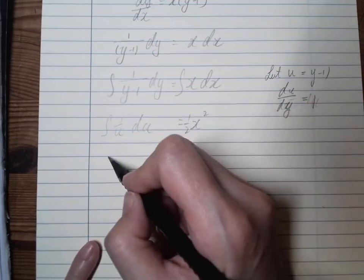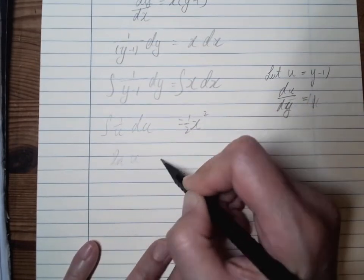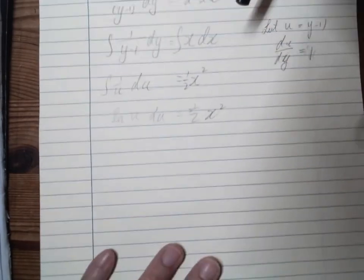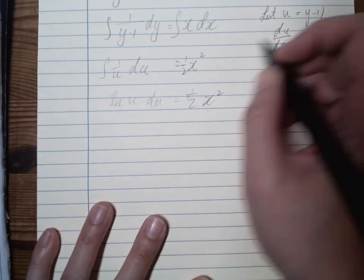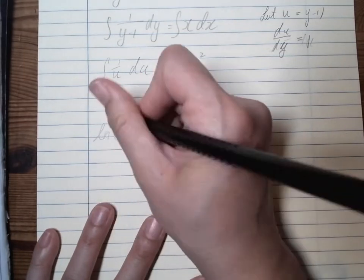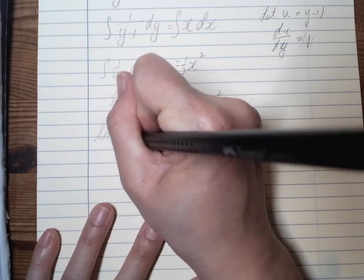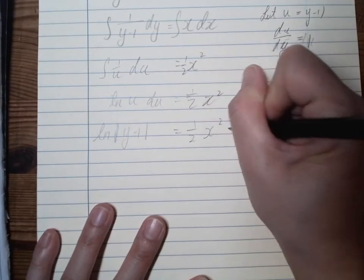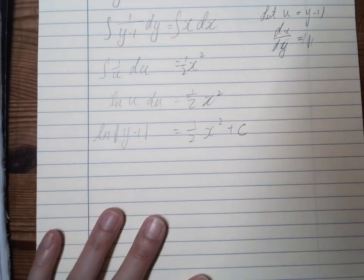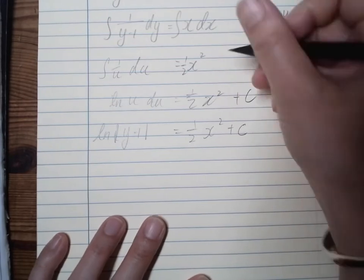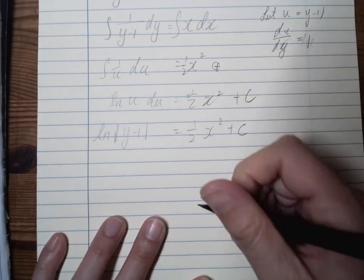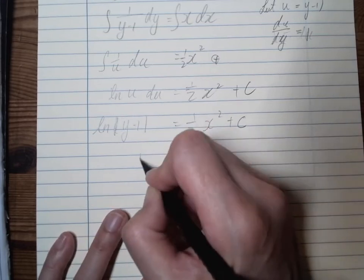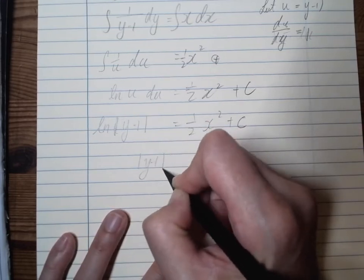Integrating 1 over u du gives ln(u), so we have ln|y minus 1| equals one half x squared. We need to add a constant c on one side, so we have ln|y minus 1| equals one half x squared plus c.